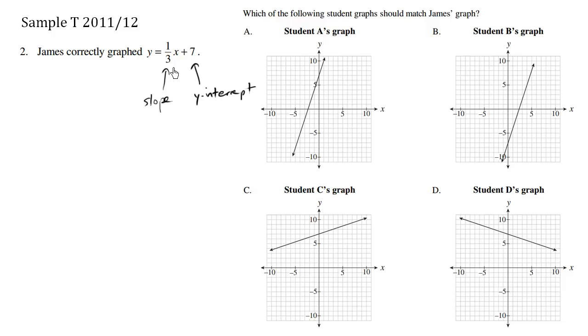So the slope of one-third should be pretty flat. The slope of zero looks like this. The slope of one would be like this. The slope of a half would be climbing, but not so steeply as one.